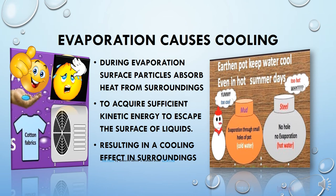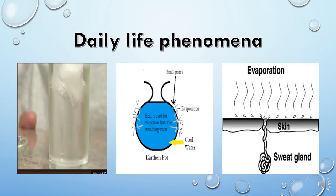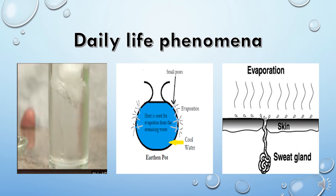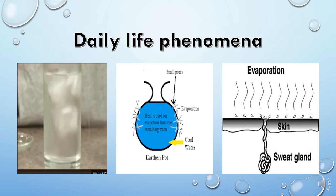Why does evaporation cause cooling? During evaporation, particles require some amount of heat energy to escape the surface of the liquid. These particles absorb heat from their surroundings, which results in a cooling effect. You can also observe in daily life that when you fill cold water or ice in a container, after some time you see water droplets on the outside of the glass. These droplets prove the presence of water vapor in the air — the cold glass causes the surrounding water vapor to condense on its surface.